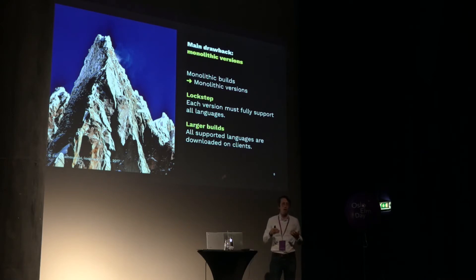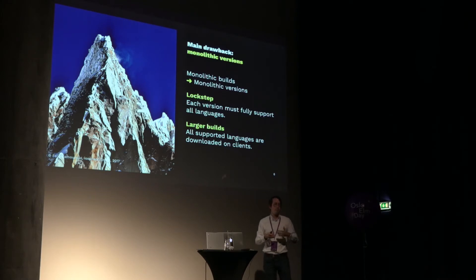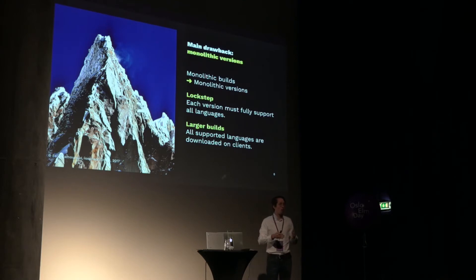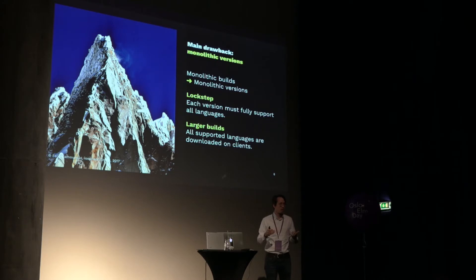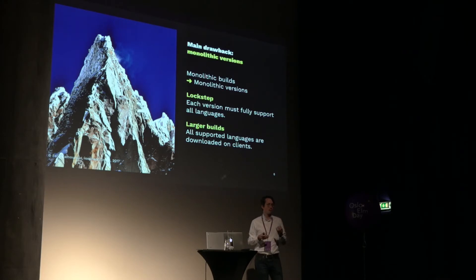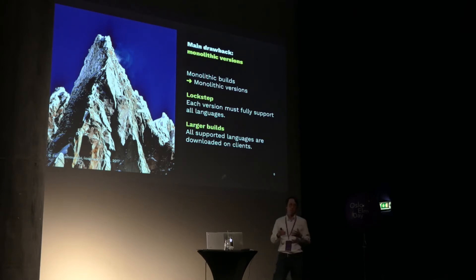In addition to needing to keep the language in your app model and pass it around, the other drawback is that a monolithic build entails monolithic versions. Whenever you add a new function, it needs to be added to all languages at the same time. You can't roll out an English version 1.1 first and then add the feature in other languages later — all versions have to move forward in lockstep. And depending on how many languages you support, it increases the build size; for example a Swiss app nationally would have four languages.